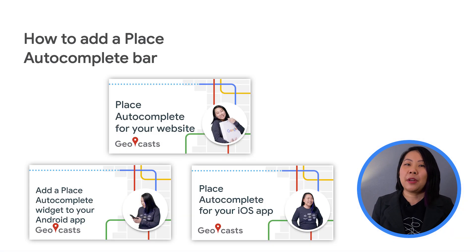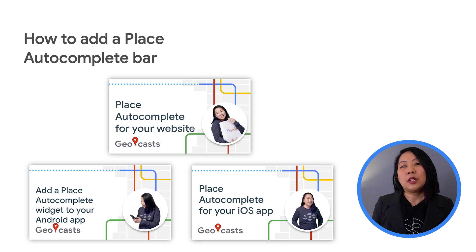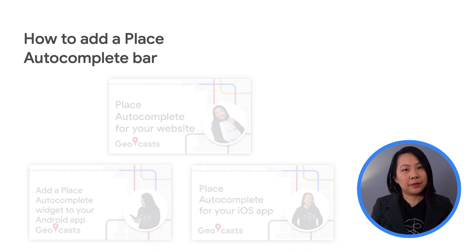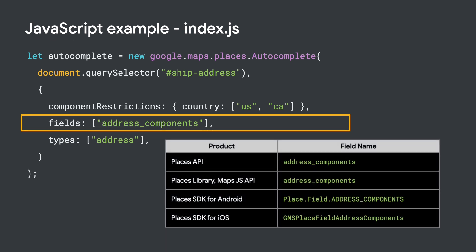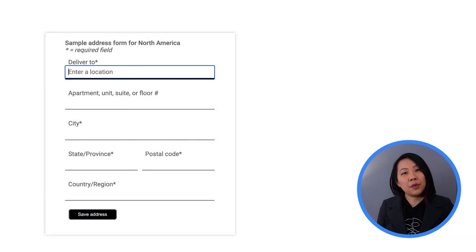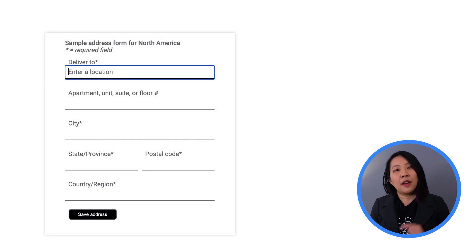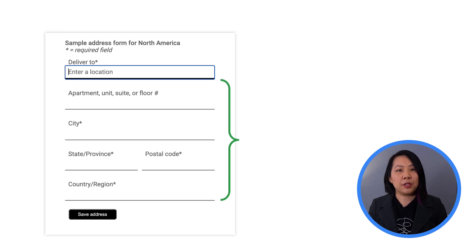See my other videos for how to add a Place Autocomplete bar to a website, Android app, or iOS app. Remember to set the fields property to request the address components field. I've listed the exact field names here, which depend on which API or SDK you're using. Below that, you can have your regular address form with all the fields you need from the user.